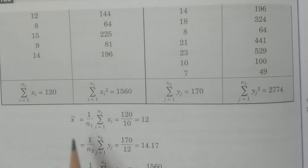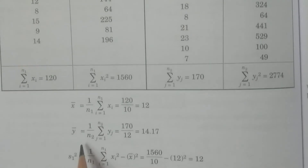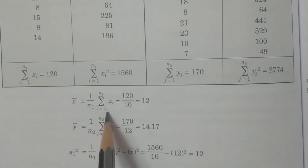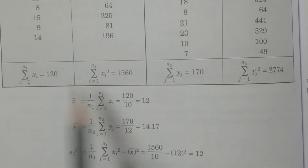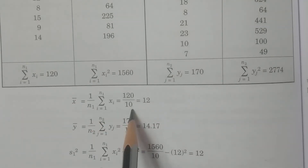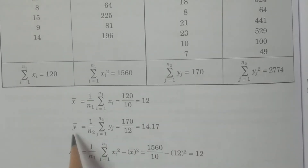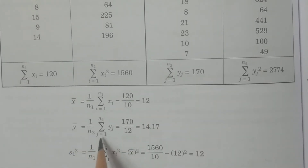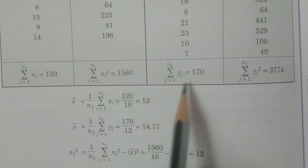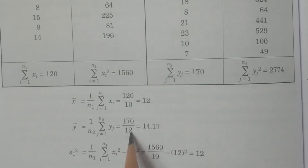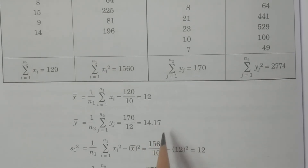First, calculate the means x̄ and ȳ. x̄ = (1/n1) × Σxi = 120 / 10 = 12. And ȳ = (1/n2) × Σyj = 170 / 12 ≈ 14.17. Check and verify these values.